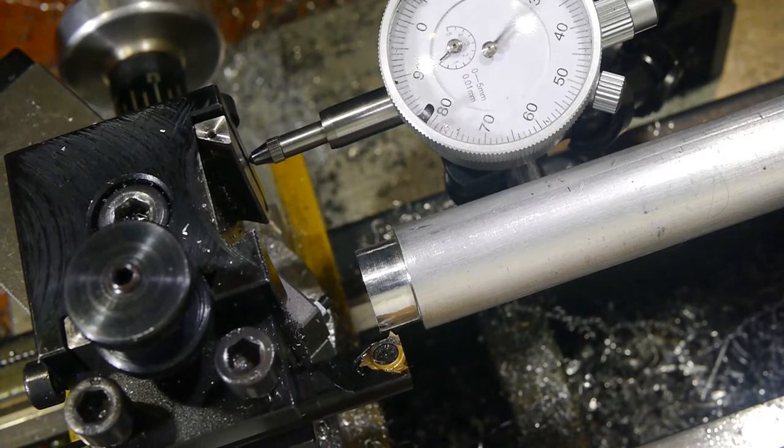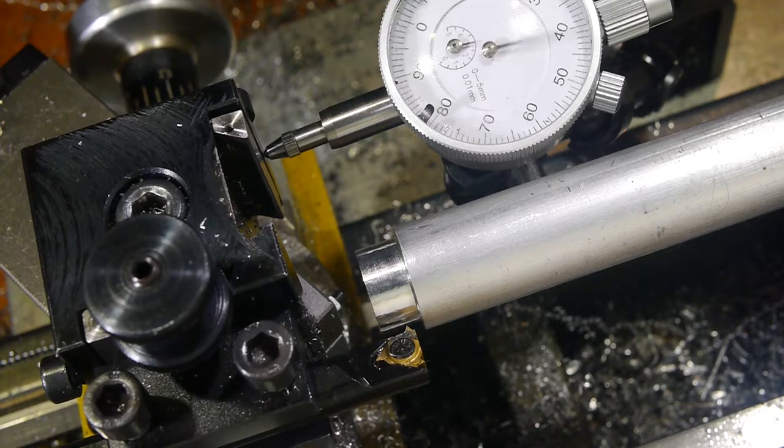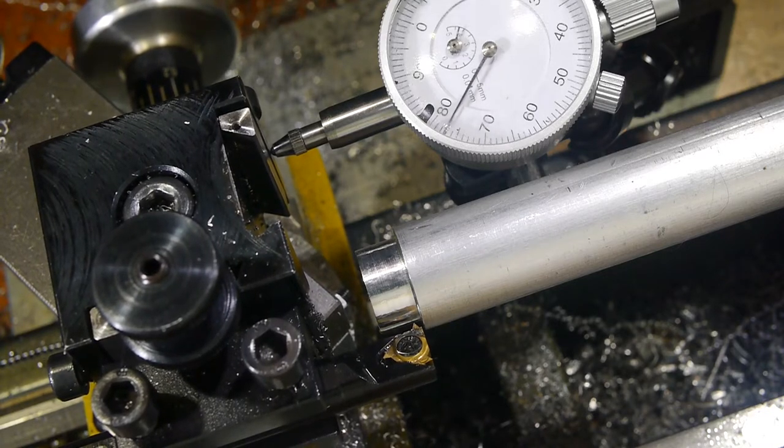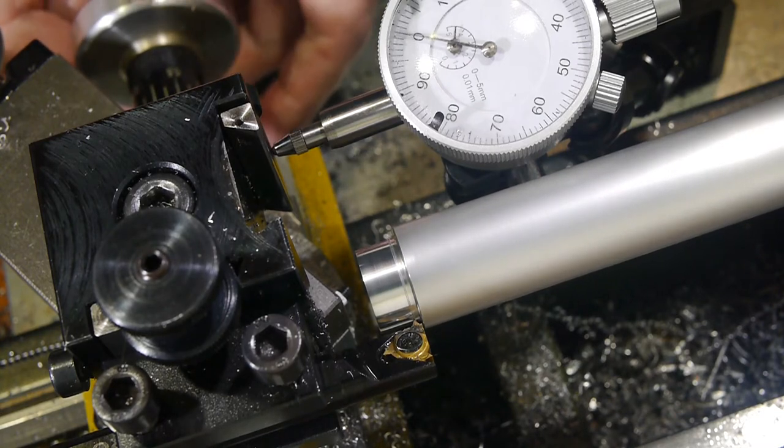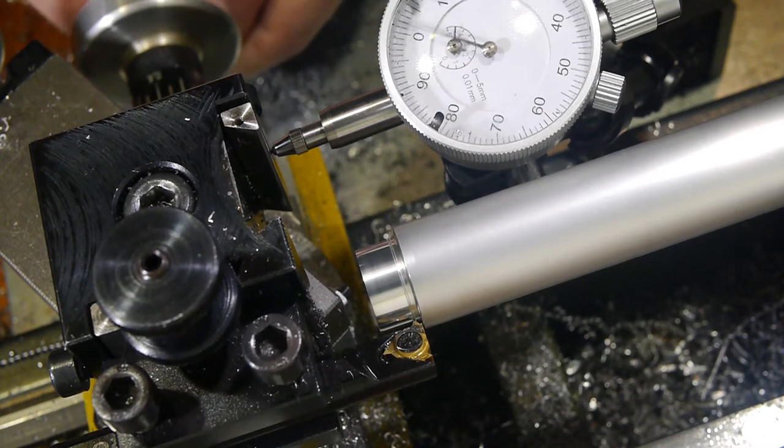I took a slightly different approach to the thread to avoid using the parting tool this far from the chuck. Instead I used the thread tool to plunge cut its own starting groove and used the dial indicator to locate the groove, so the tool could be returned exactly to the right place for the start of each pass.